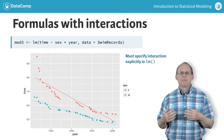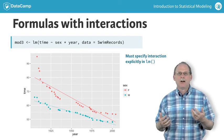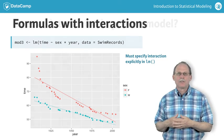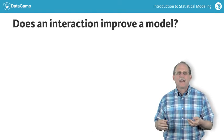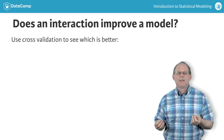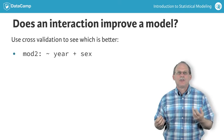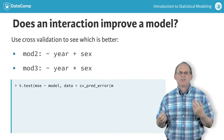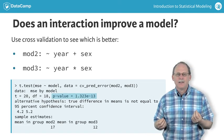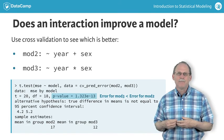Including interactions sometimes helps, sometimes doesn't help, and sometimes hurts the performance of a model. When in doubt, cross-validation using a test set is a good way to assess performance. So you always have a way to decide whether interactions are helping or not.